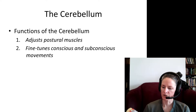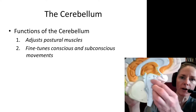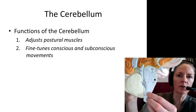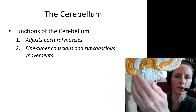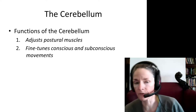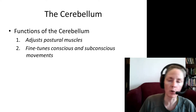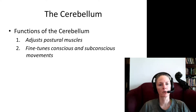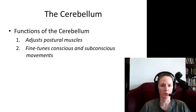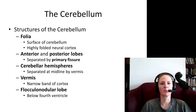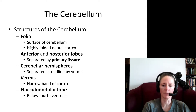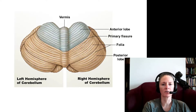Moving on to the cerebellum, which is found posterior to our brainstem structures and segregated from them by the fourth ventricle. The cerebellum is important for fine-tuning ongoing motor movements, and it's also going to adjust our postural muscle tone so that when we are sitting or standing, we maintain the tension necessary in those muscles to keep us upright and balanced. Let's look at some anatomical features of the cerebellum.